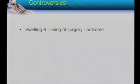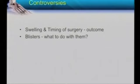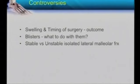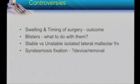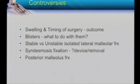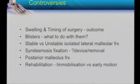Swelling and timing of surgery — some of this has already been touched upon. When do you fix your ankle fractures? Do you crack on straight away or wait and come back at a later time for definitive fixation? What about the blisters? We know we get fracture blisters because the soft tissue envelope is very thin. How do you define stable versus unstable? We know about the classifications of Lauge-Hansen or AO, but is this a stable or unstable injury? And what about the syndesmosis? How do you fix them, which device, when do you remove? And a little bit about rehabilitation — get them going quick or put them in plaster and wait.